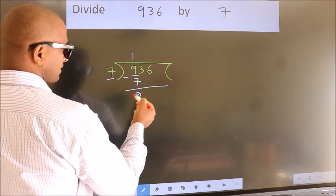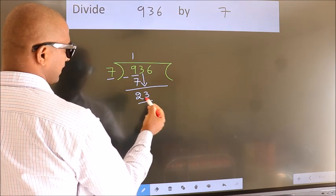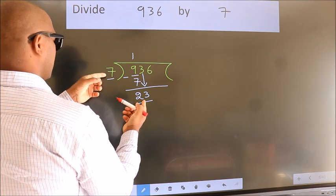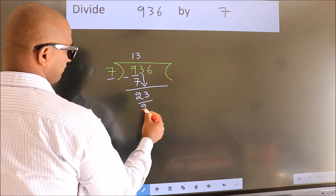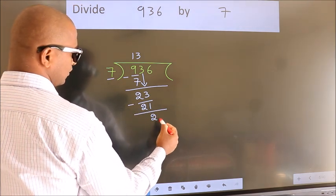After this, bring down the beside number. So 3 down. So 23. A number close to 23 in the 7 table is 7 times 3 equals 21. Now we subtract. We get 2.